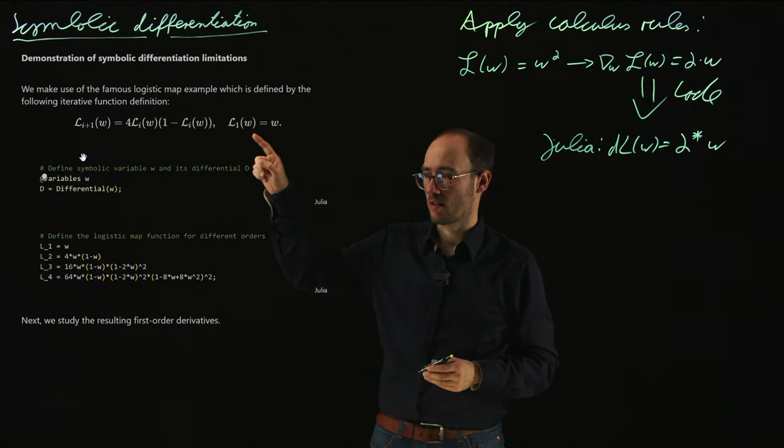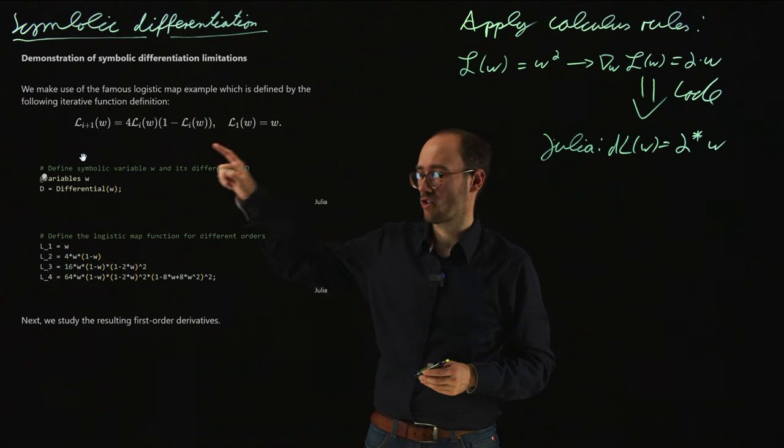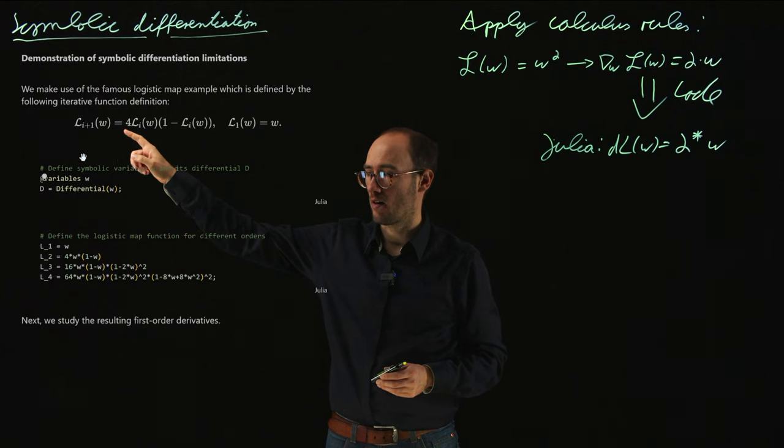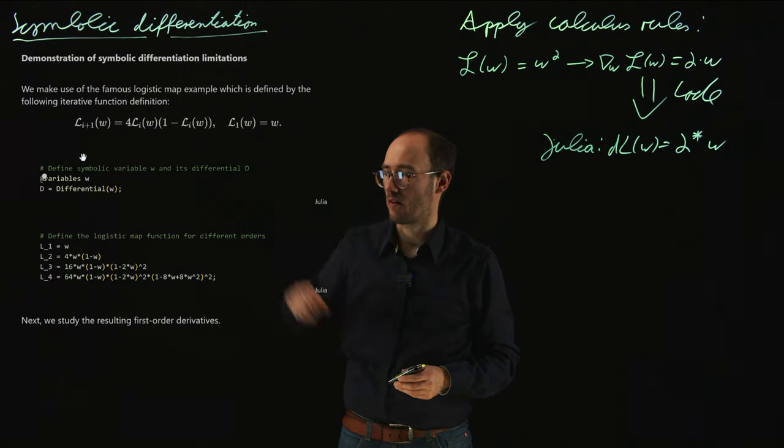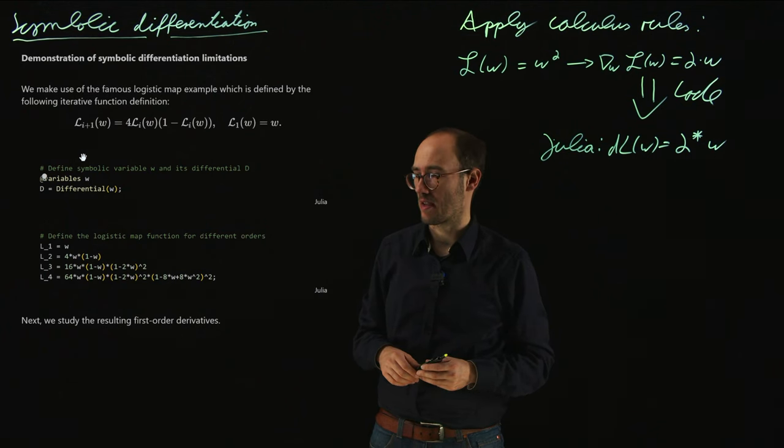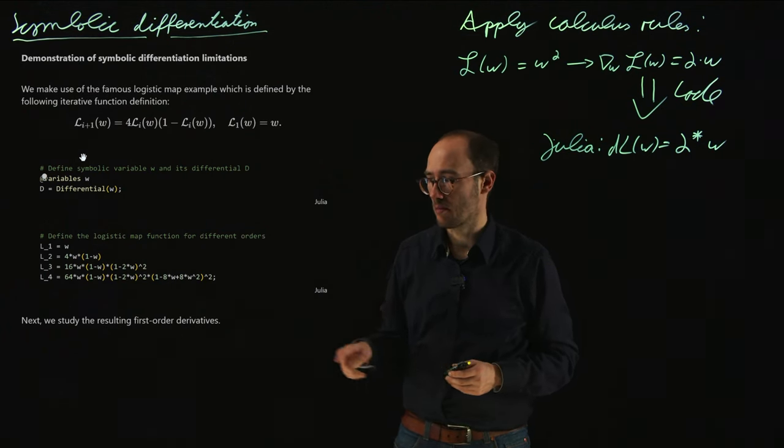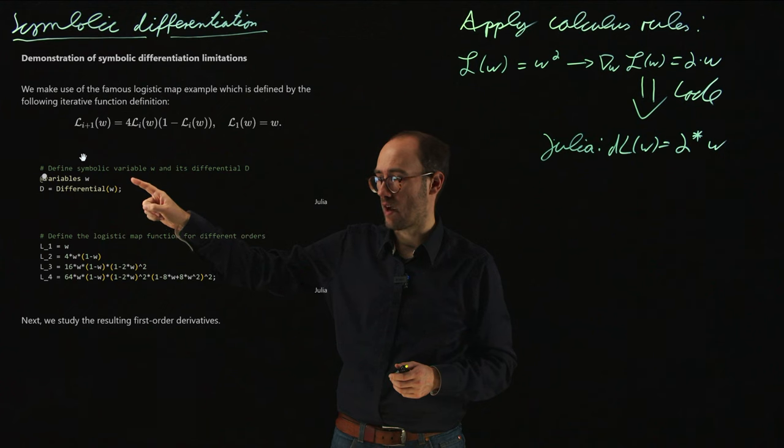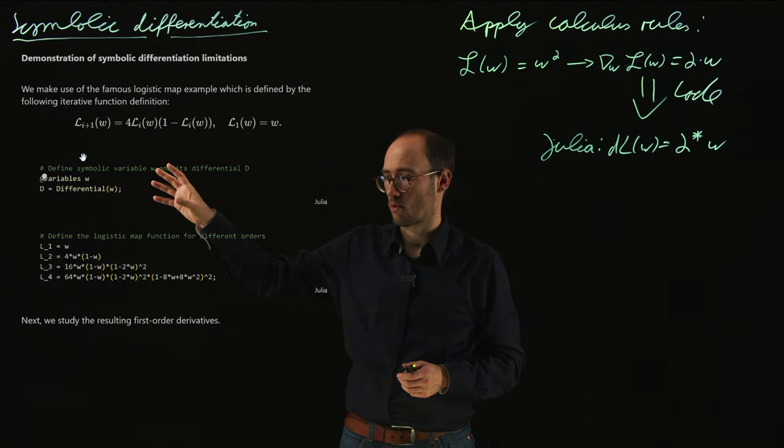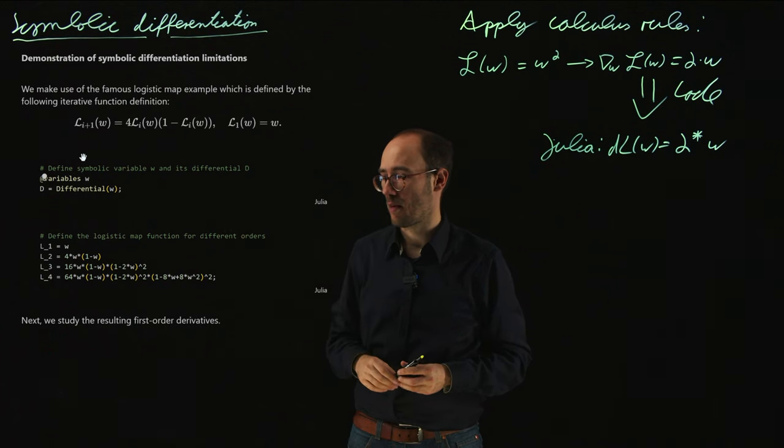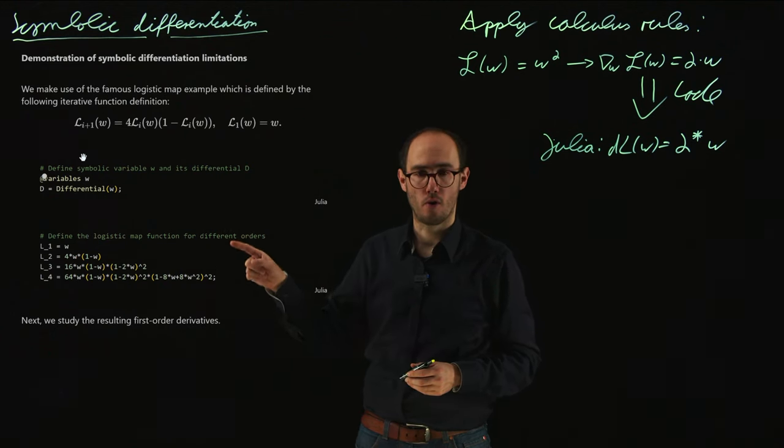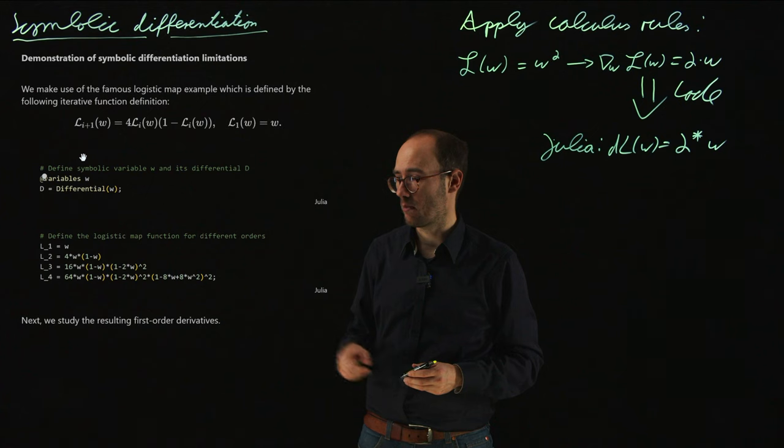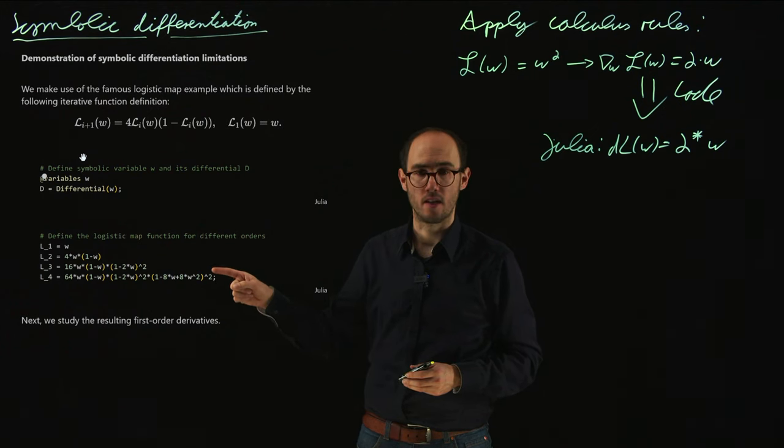So L_1(w) is basically just w, so just a scalar function, and then in a polynomial fashion functions L_{i+1}(w) are 4 times L_i(w) times (1 minus L_i(w)), so basically a polynomial function which we build up. And with the Symbolics.jl toolbox, what we do here is we define w and the differential of w as symbolic expressions. And then based on the logistic map example, we write down the first four orders of the symbolic map as functions depending on our symbolic expression w.